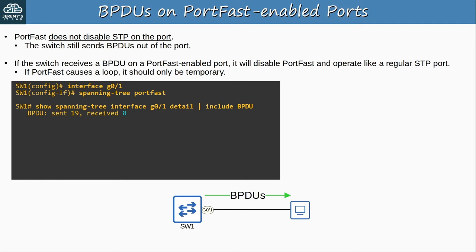'Show spanning-tree interface detail' confirms BPDU Filter is enabled. To enable it globally, use 'spanning-tree portfast bpdufilter default'. BPDU Filter behaves differently depending on whether you enable it per port or globally. If enabled per port, the port will not send BPDUs and will ignore any BPDUs it receives, effectively disabling STP on the port. If enabled globally, BPDU Filter is activated on all PortFast-enabled ports — the port will not send BPDUs except a few when the interface starts up. But if the port receives a BPDU, PortFast and BPDU Filter are disabled and the port operates as a normal STP port.